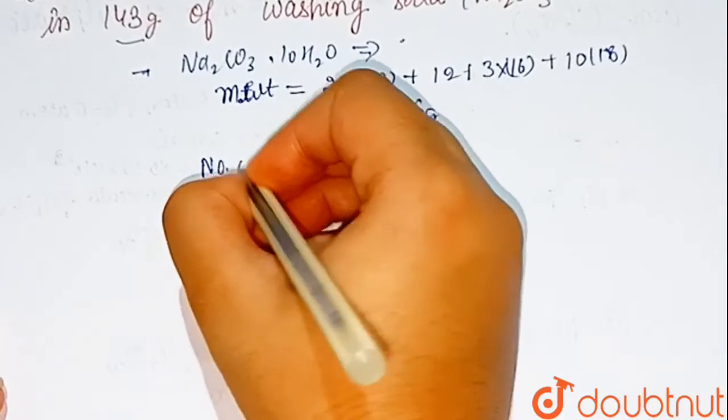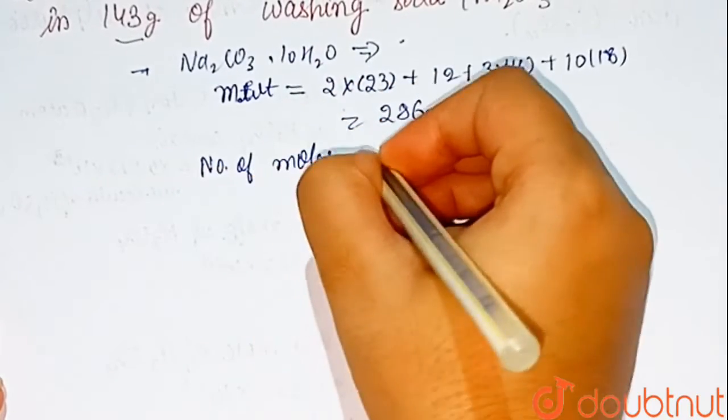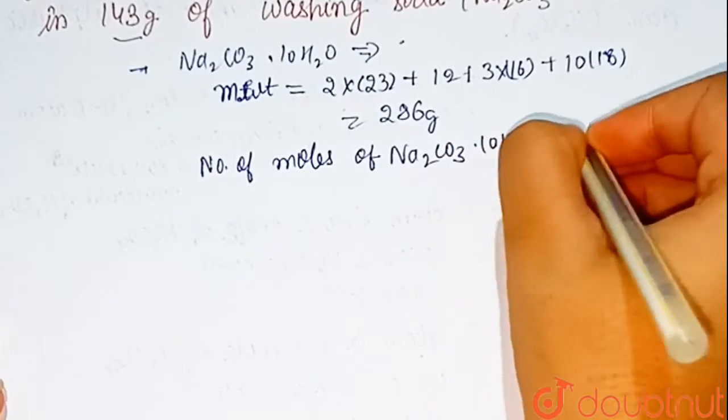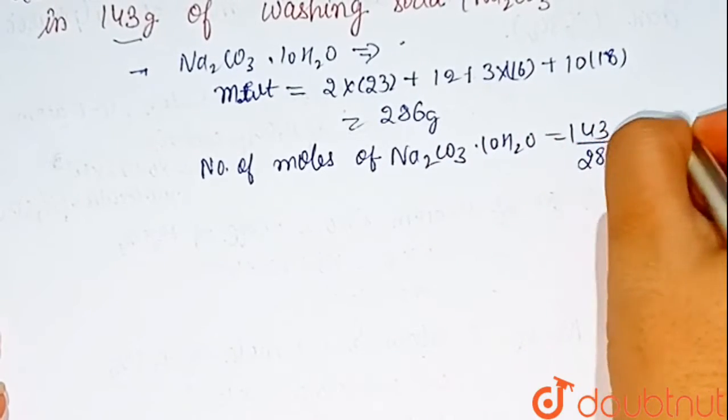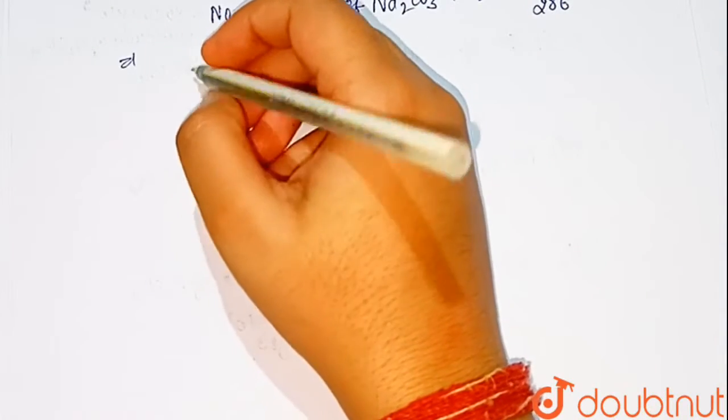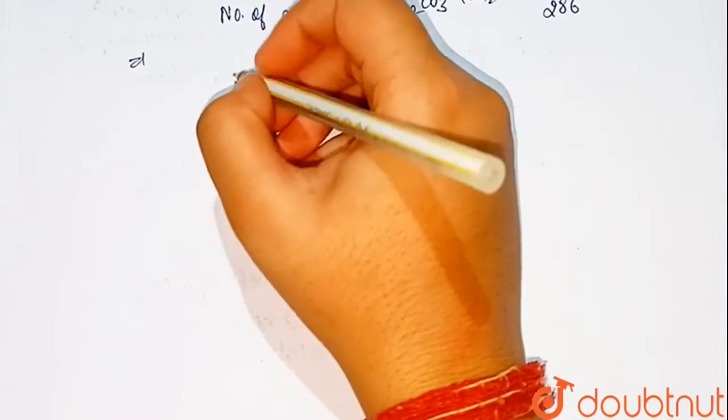So, number of moles of NA2CO3.10H2O equals 143 upon 286 which equals 0.5. So now let us calculate the number of atoms of each type.